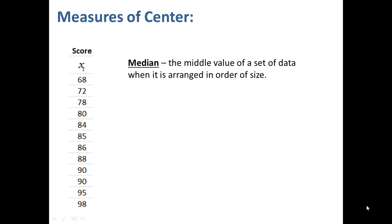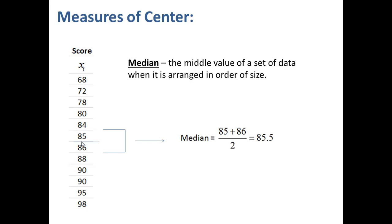The next measure of center is the median. The median is the middle value of a set of data when it is arranged in order of size. Here we have 12 data values, so there's no single middle value. We take the two middle values, 85 and 86, and average them to get a median of 85.5.